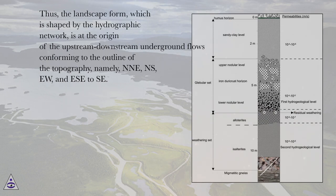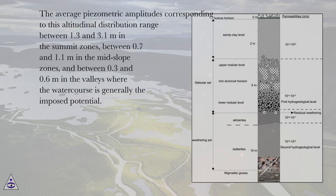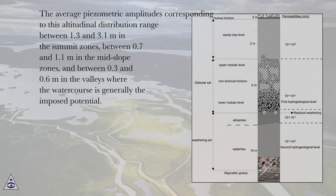The flow orientations are predominantly NNE, NS, and SSE. The average piezometric amplitudes corresponding to the altitudinal distribution range between 1.3 and 3.1 meters in the summit zones, between 0.7 and 1.1 meters in the mid-slope zones, and between 0.3 and 0.6 meters in the valleys, where the watercourse is generally the imposed potential.